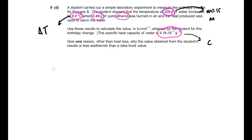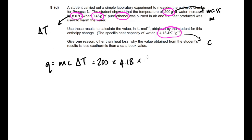So Q equals M times C times delta T. There's M: 200. There's C: 4.18. Delta T is 8. Work that out and the answer is 6,688 joules. Remember: it's joules, not kilojoules. Joules. Do not get that wrong because it will affect the rest of your question.